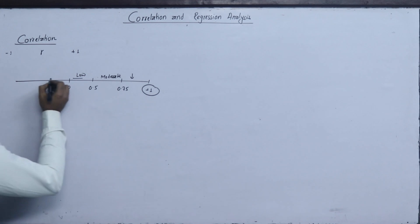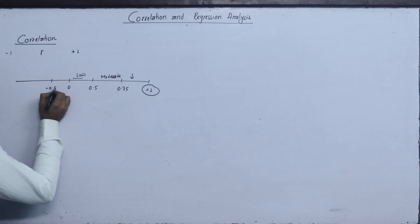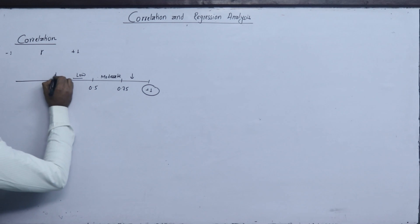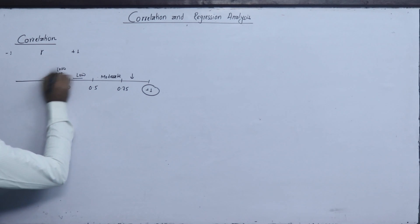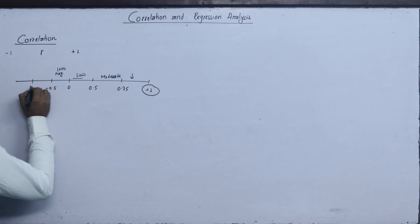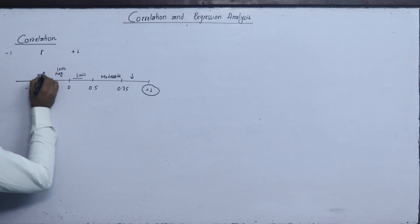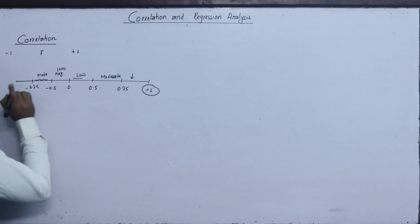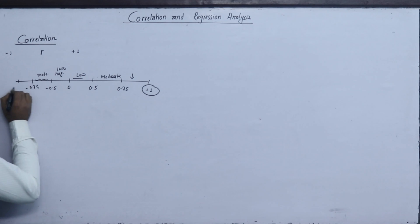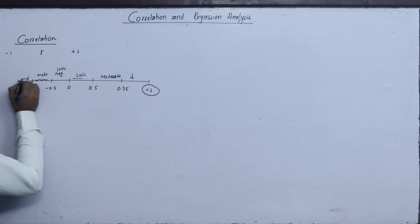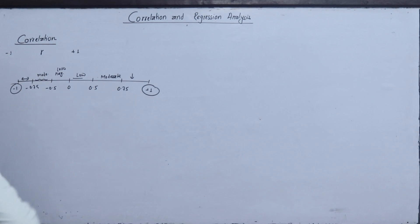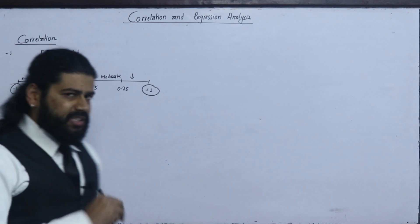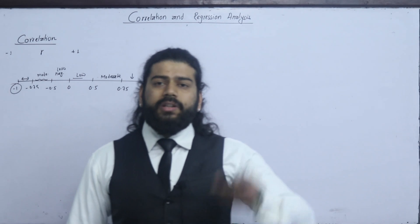Now, from 0 to minus 0.5 is a low degree negative relation. From minus 0.5 to minus 0.75 is moderate negative. From minus 0.75 to minus 1 is high degree negative. And minus 1 is perfectly negative. If R equals positive 1, x value changes 10%.